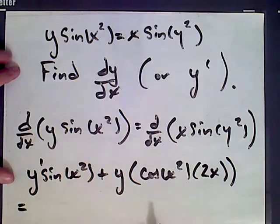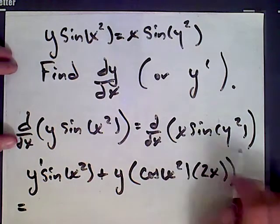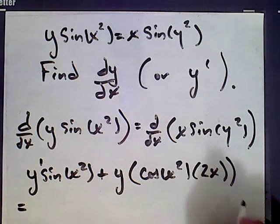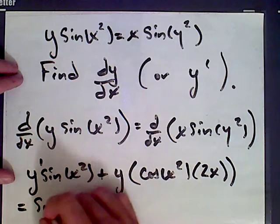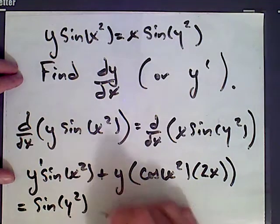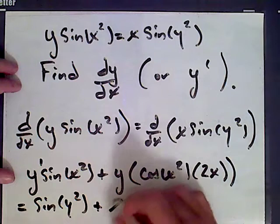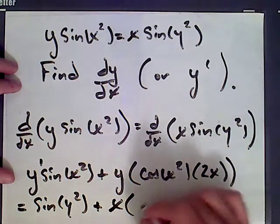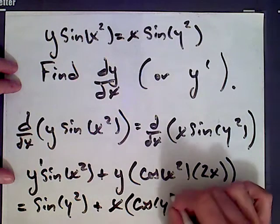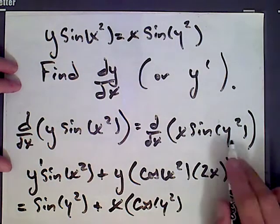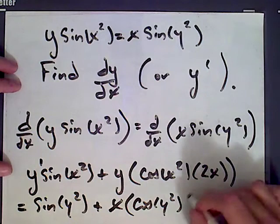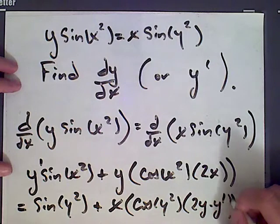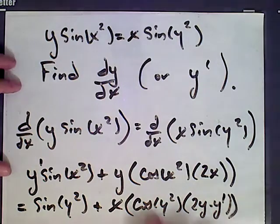That equals the derivative of the right-hand side. Again, we're going to use the product rule and then the chain rule when we go to differentiate sine of y squared. The derivative of x is 1, so we get 1 times sine of y squared, plus x times the derivative of sine of y squared. The derivative of sine is cosine, so we get cosine of y squared times the derivative of what's in the bracket of sine. That gives sine of 2y, and don't forget to multiply by y prime because y is also a function of x — so it's using the chain rule twice here.